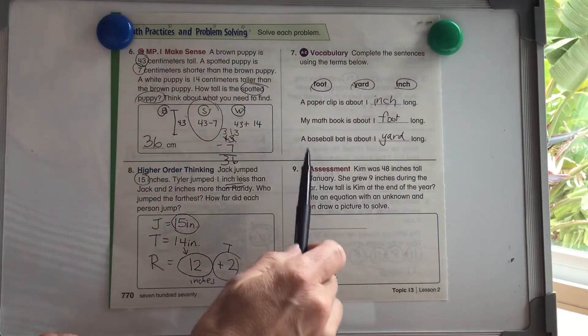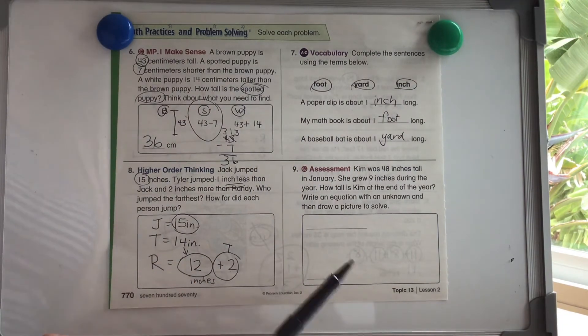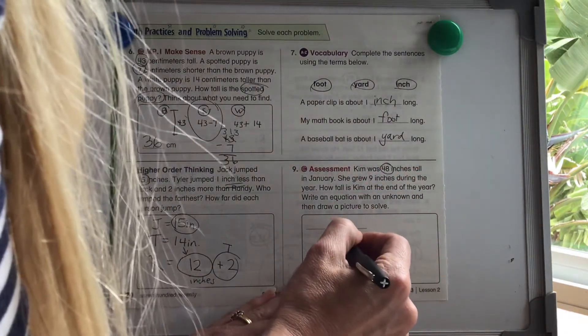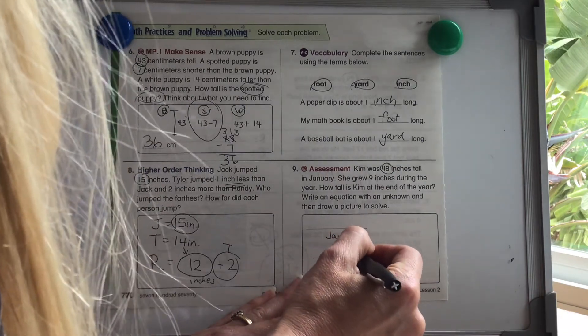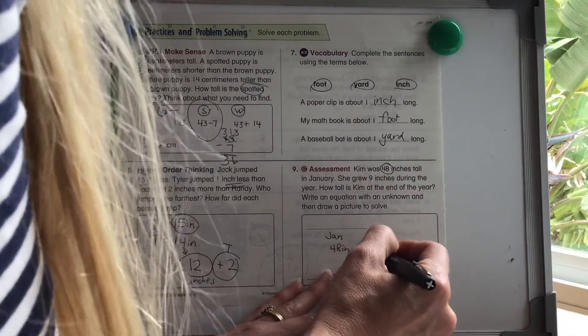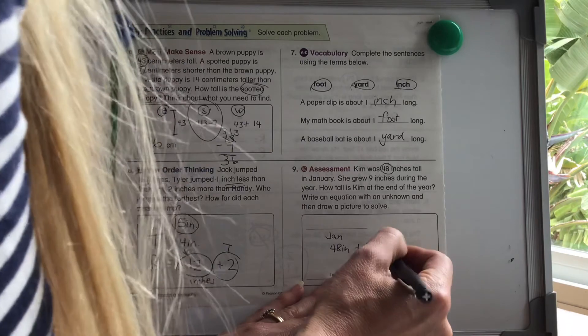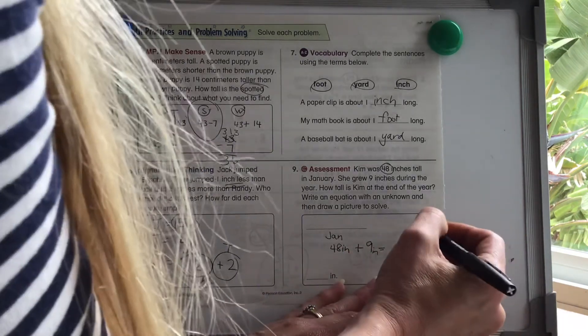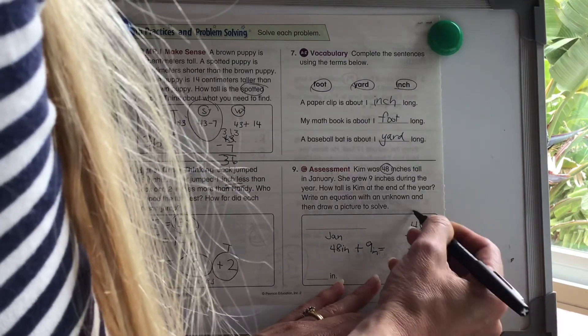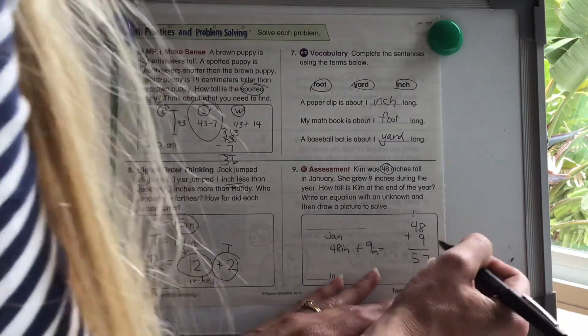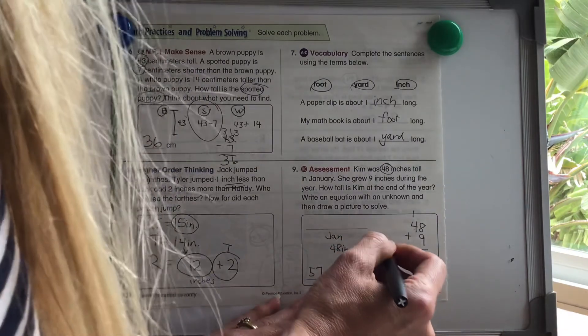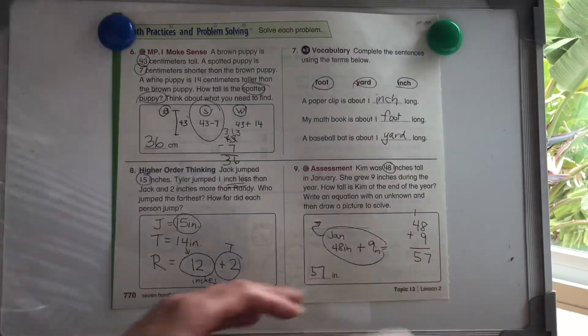Let's look at our assessment. Again, when we see these, it lets us know we have questions just like this on our test. Kim was 48 inches tall in January. So I'm going to put a J for January for Kim. She's 48 inches in January. She grew nine inches during the year. So she's growing nine more inches. How tall is Kim at the end of the year? So 48 inches plus nine inches. Let's stack it and add it. 48 plus nine, eight plus nine, I know is 17. Four plus one is five is 57 inches. So again, here's our equation. We can write it here on the line if we wanted to, but a great job, everybody.